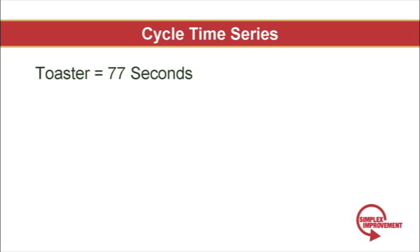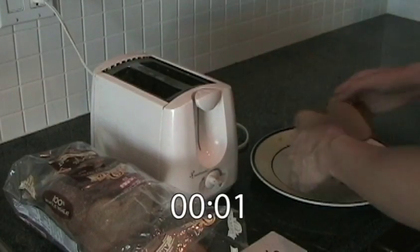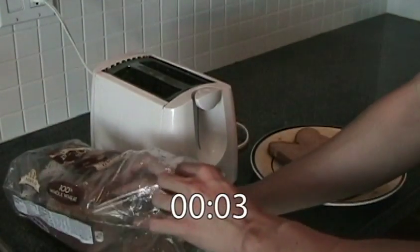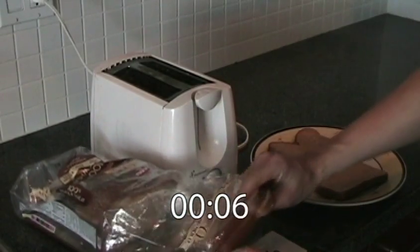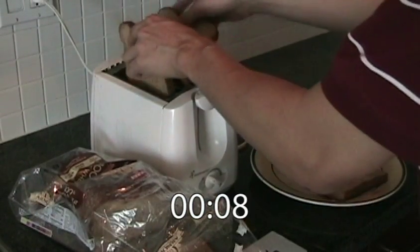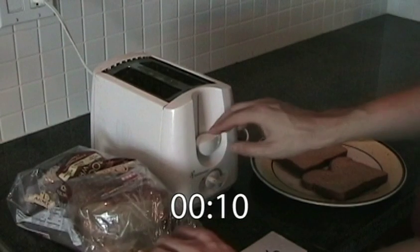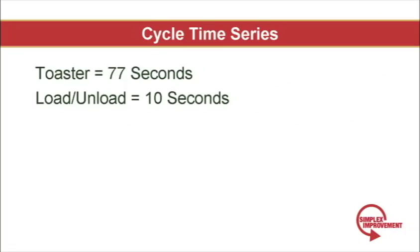In general, workers are coupled with machines to perform manual tasks like fitting or loading and unloading parts. This is called manual cycle time. So in our case, it takes 10 seconds to load and unload the toaster. So the manual cycle time is 10 seconds.